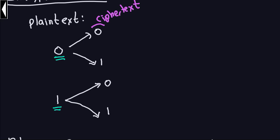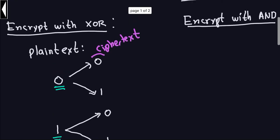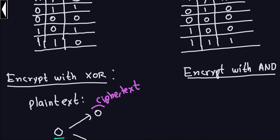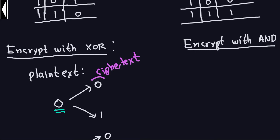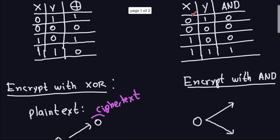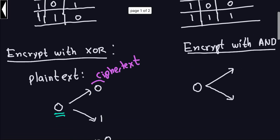That property does not happen if you use encryption with AND. For example, if you decide to encrypt with the AND gate: my plaintext is a zero, and I encrypt with AND. If my string S is a one, then I get zero; and if S is zero, I also get zero. So zero goes to zero both times.